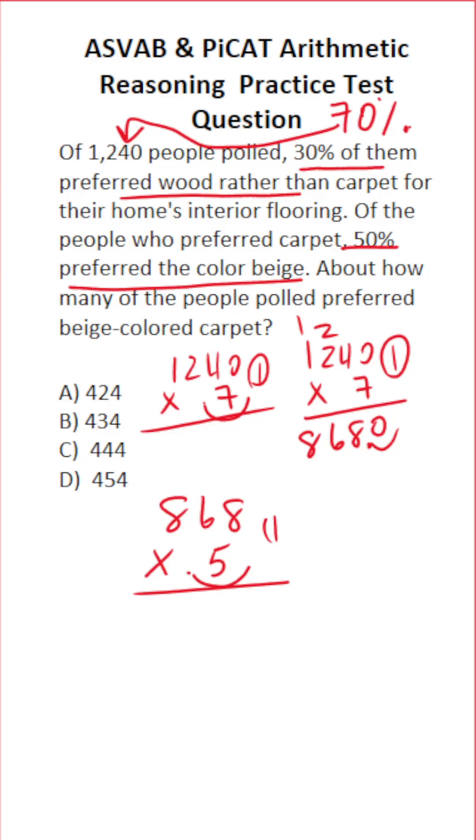move this decimal one place to the right to make this 868 times 5, albeit with one decimal to move back in when we're done. 8 times 5 is going to be 40, carry a 4. 6 times 5 is 30 plus 4 is 34, carry a 3. 8 times 5 is 40 plus 3 is 43. Bring our one decimal back in.